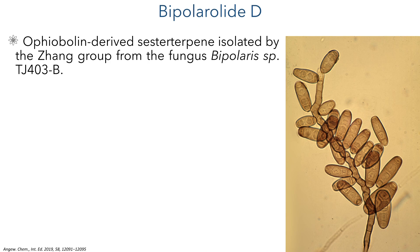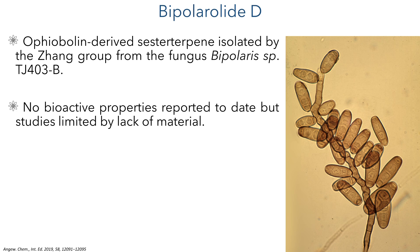Bipolaride D is a sester terpene that was first isolated by the Jan group in 2019 from Bipolaris fungus. Initial studies do not show any interesting bioactive properties, but these have been limited by a lack of material, and related compounds have shown promise in medicinal chemistry.